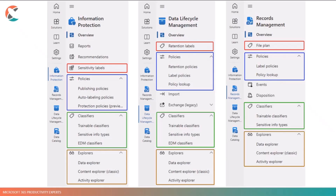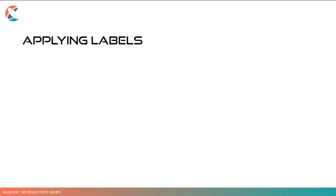Looking at the Purview menu, all these labels have similarities: policies for publishing labels, classifiers for auto-labeling content based on the content itself, and data explorers and content explorers to easily see what data has been labeled. Of course, sensitivity labels and retention labels do very different things, but the way they are applied and how they appear in Purview is very similar.